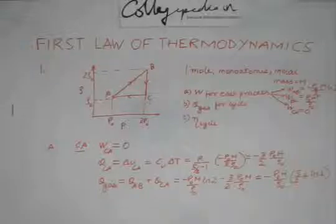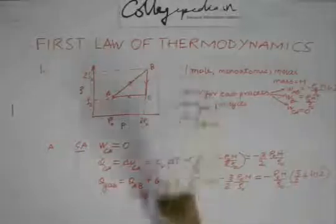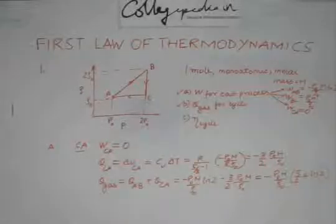So this is going to be the Q rejected by the gas. This is also taken care of. We have found out the work done, we have found out the Q rejected. Now we need to find out the eta cycle.